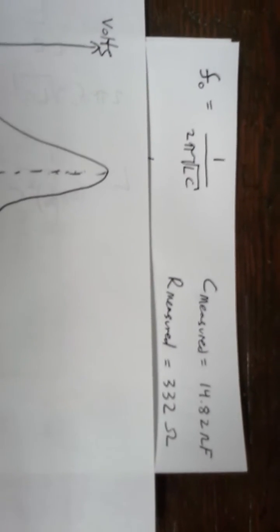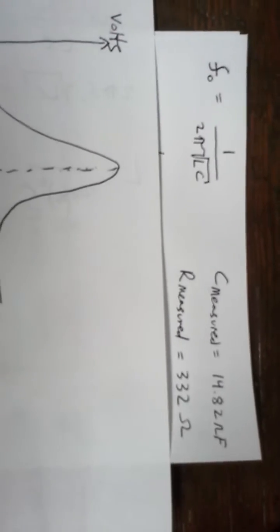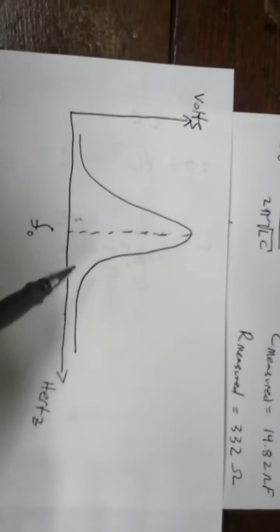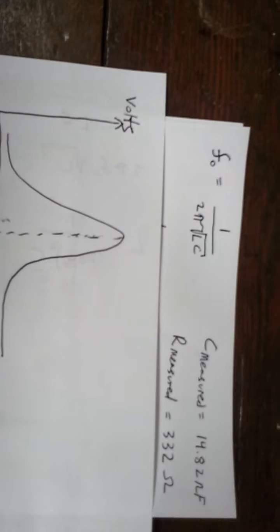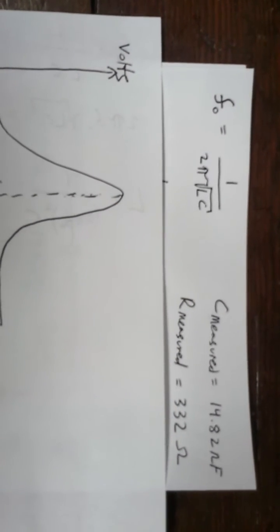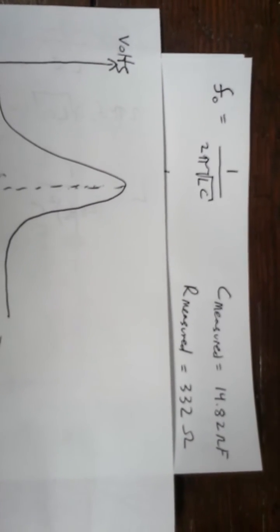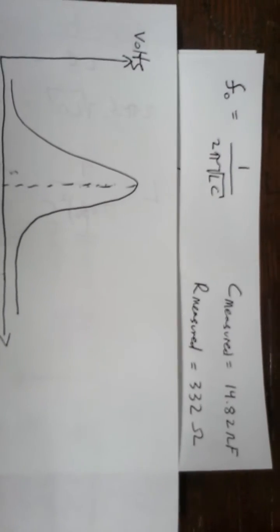I pre-measured the capacitor to be 14.82 nanofarads, and there's also resistance in there, which has to deal with the width of this curve, but it doesn't go into the formula for the resonant frequency. And the resistance that I measured is 332 ohms.